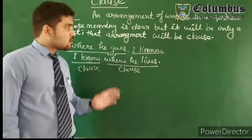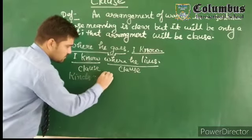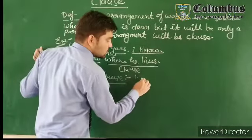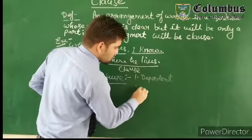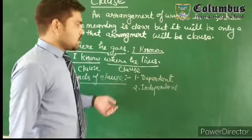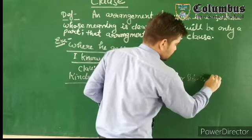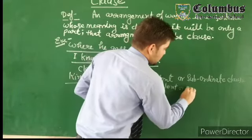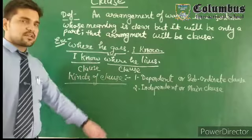These clauses are classified into only two categories. What would be the kinds of clause? Basically there are two kinds: the first one is dependent, and the second one will be independent. These dependent clauses are called dependent or subordinate clauses, and the independent ones are called independent or main clauses. These two are the basic categories of clause.